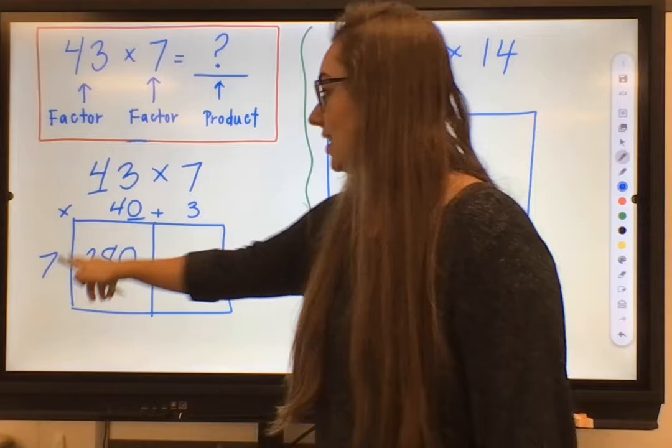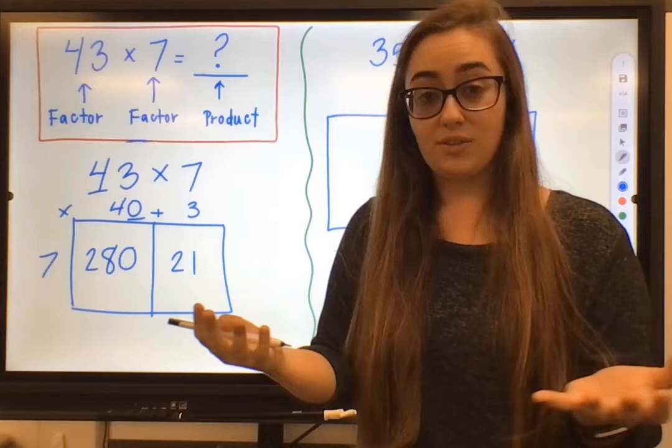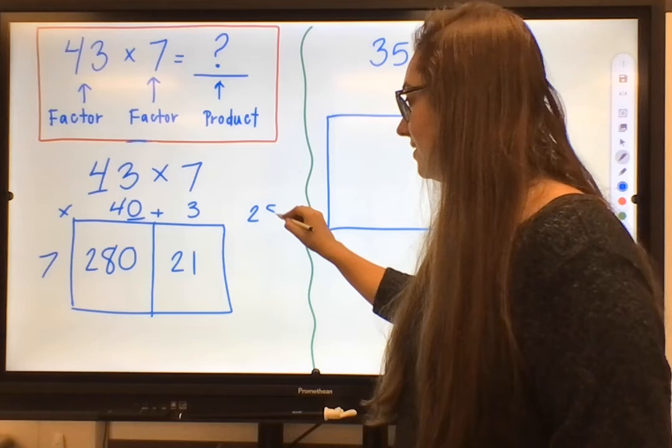Now with this last one, we have 7 times 3. I know that to be 21. This is the same thing as before with the standard algorithm, where you have those partial products that you have to put together to get your final result or your final product.